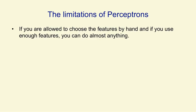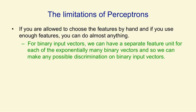If you're allowed to choose the features by hand, and if you use enough features, you can make a perceptron do almost anything. Suppose we have binary input vectors and we create a separate feature unit that gets activated by exactly one of those binary input vectors. We'll need exponentially many feature units, but now we can make any possible discrimination on binary input vectors — so for binary input vectors, there's no limitation if you're willing to make enough feature units.